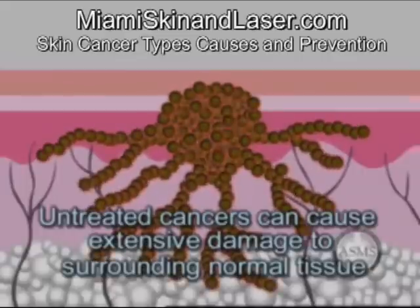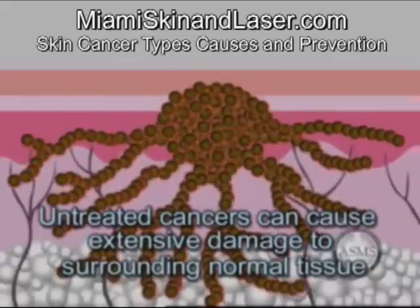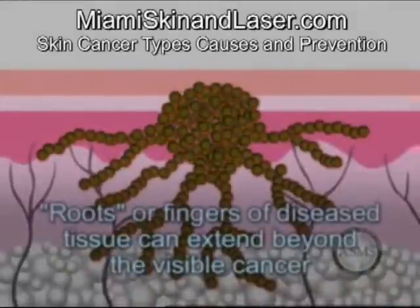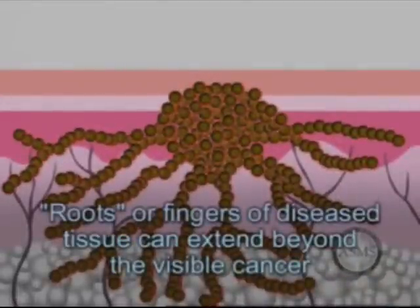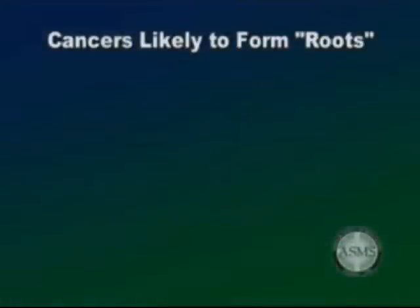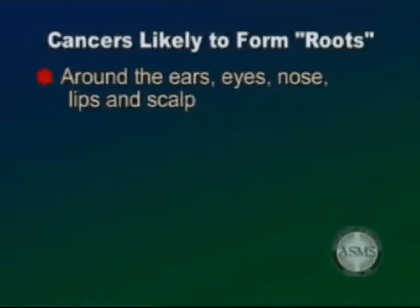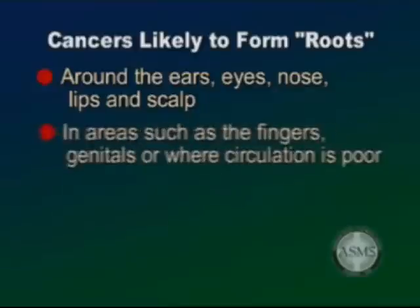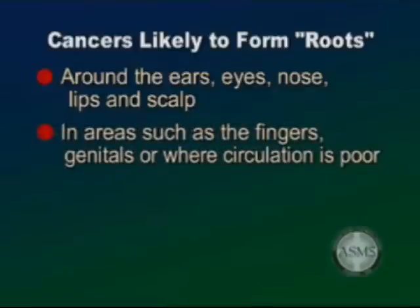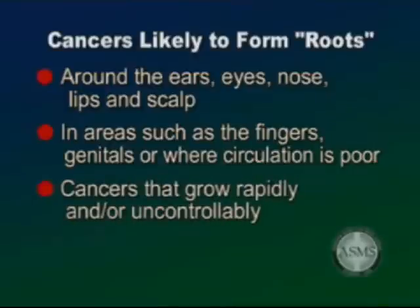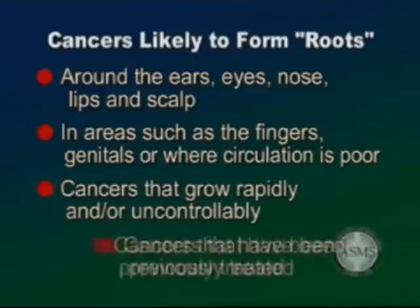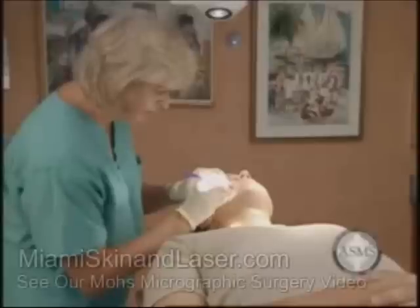A biopsy may be required to determine if a skin lesion is in fact a skin cancer. Cancers frequently invade surrounding normal tissue, causing extensive destruction of skin and bodily structures. Many cancers may form roots or fingers of diseased tissue that can extend beyond the boundaries of the visible cancer. Cancers most likely to form these complicated root systems are located in cosmetically sensitive or functionally critical areas — around the ears, eyes, nose, lips, and scalp — or in areas where excess tissue is minimal, such as the fingers and genitals, or where circulation is poor, or cancers that grow rapidly and/or uncontrollably, or that have been previously treated.